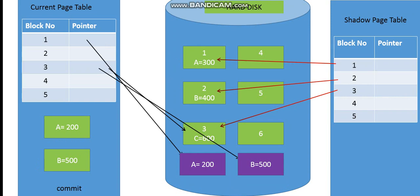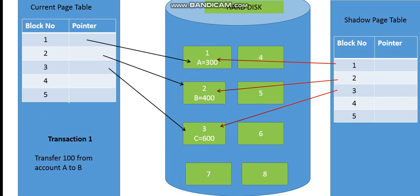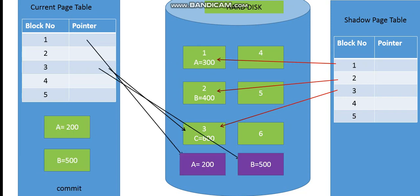Once the transaction begins, the blocks are first brought into main memory for execution. Block A is brought into main memory — the value changes from 300 minus 100, giving 200. This updated block is then copied to a free available block in the hard disk — not the older position, but a new free available block.